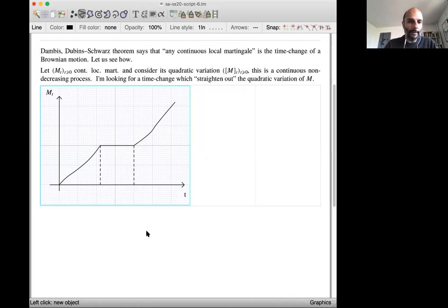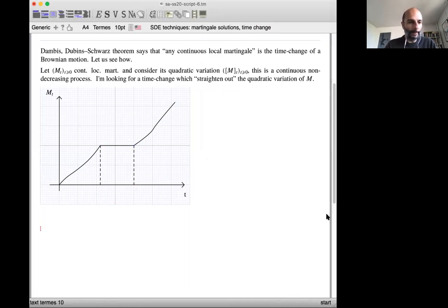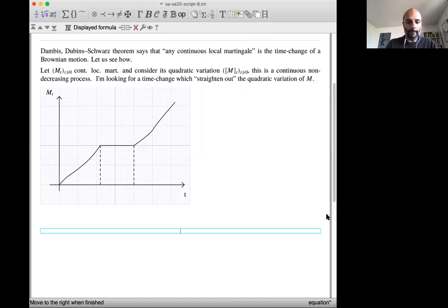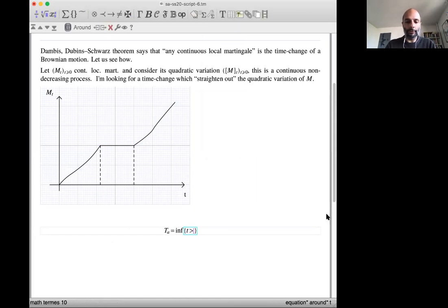Now I want to construct a time change for that. Let me define t of a. T of a is the first time I reach, the first time the quadratic variation can reach level a, and then you write it in this way.